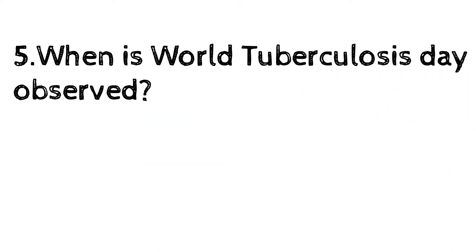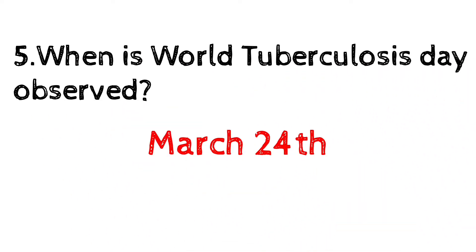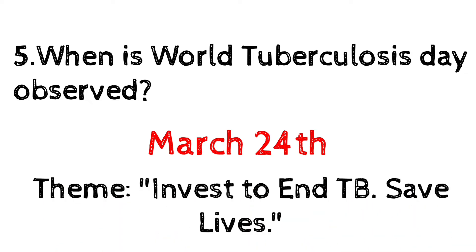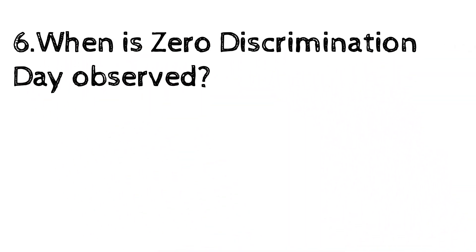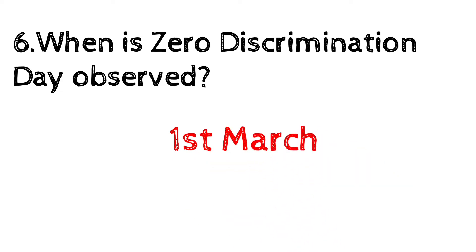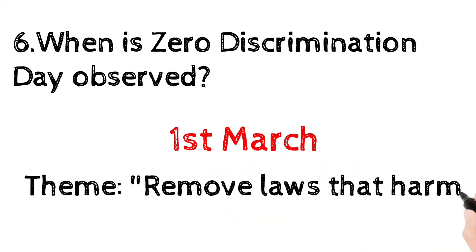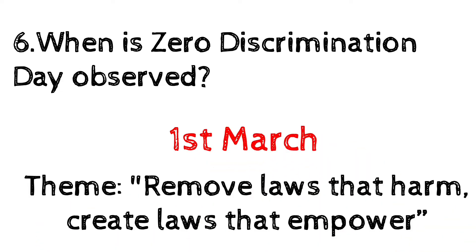When is World Tuberculosis Day observed? March 24th. The theme for 2022 TB Day is Invest to End TB, Save Lives. When is Zero Discrimination Day observed? 1st March. The theme for Zero Discrimination Day 2022 is Remove Laws that Harm, Create Laws that Empower.